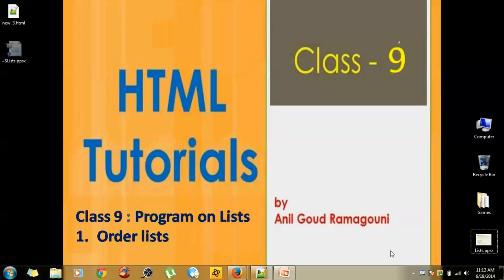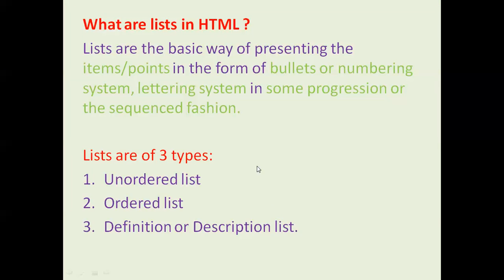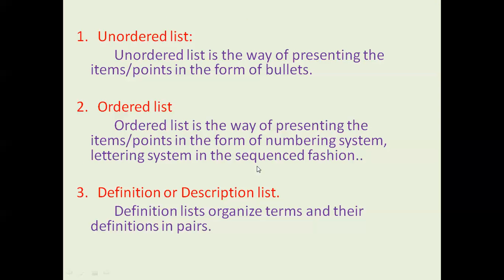What actually an ordered list is. Lists are of three types: unordered, ordered, and definition. Yesterday we completed the unordered list and today we are going to discuss about ordered list. An ordered list is the way of presenting items or points in the form of a numbering system, lettering system, Roman number system, or alphabetical order system, which will be in a sequenced order.